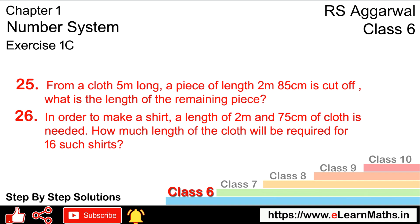Let's do question number 25 of exercise 1C — number system. Question 25: from a cloth five meters long, a piece of length two meters 25 centimeters is cut off. What is the length of the remaining piece? So how much is left? Let's work it out.